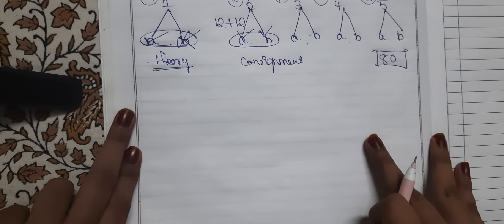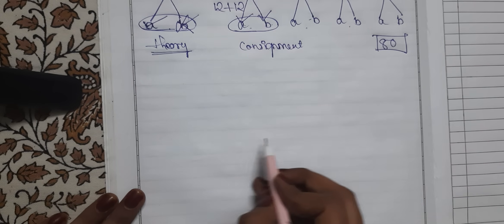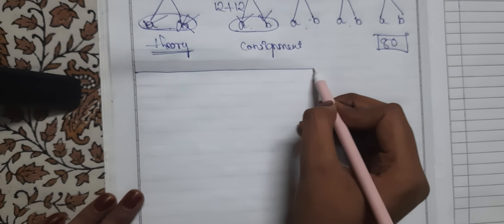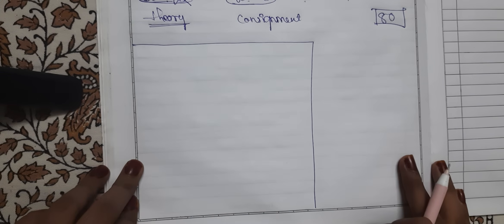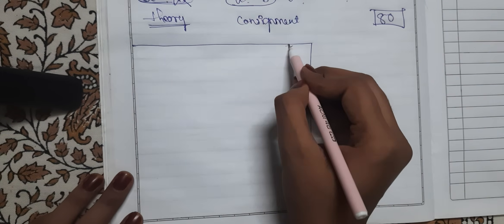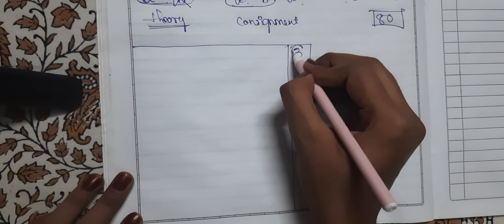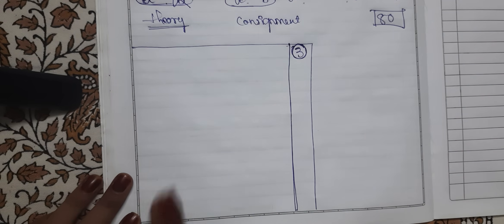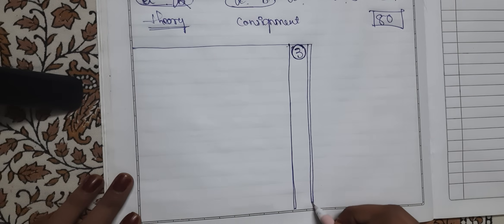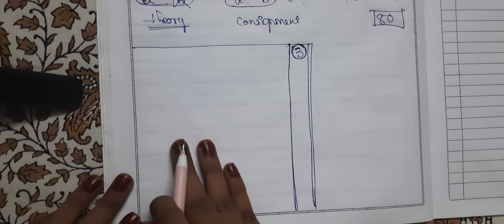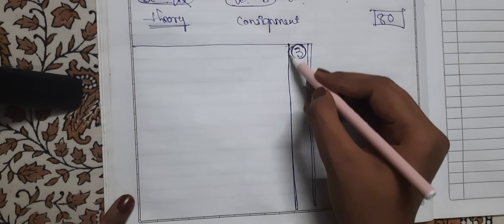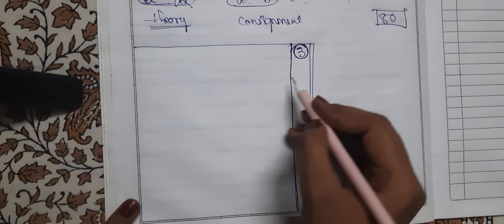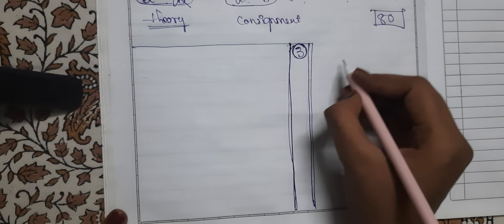Now let us look at paper presentation — how to present answers in your answer booklet to score full marks. Once you receive the answer booklet, draw your margin. For theory questions, draw the margin line closer in; for problematic questions, draw it further out, because you need more space to do the solution. Drawing the margin makes your answer look bigger and neater.